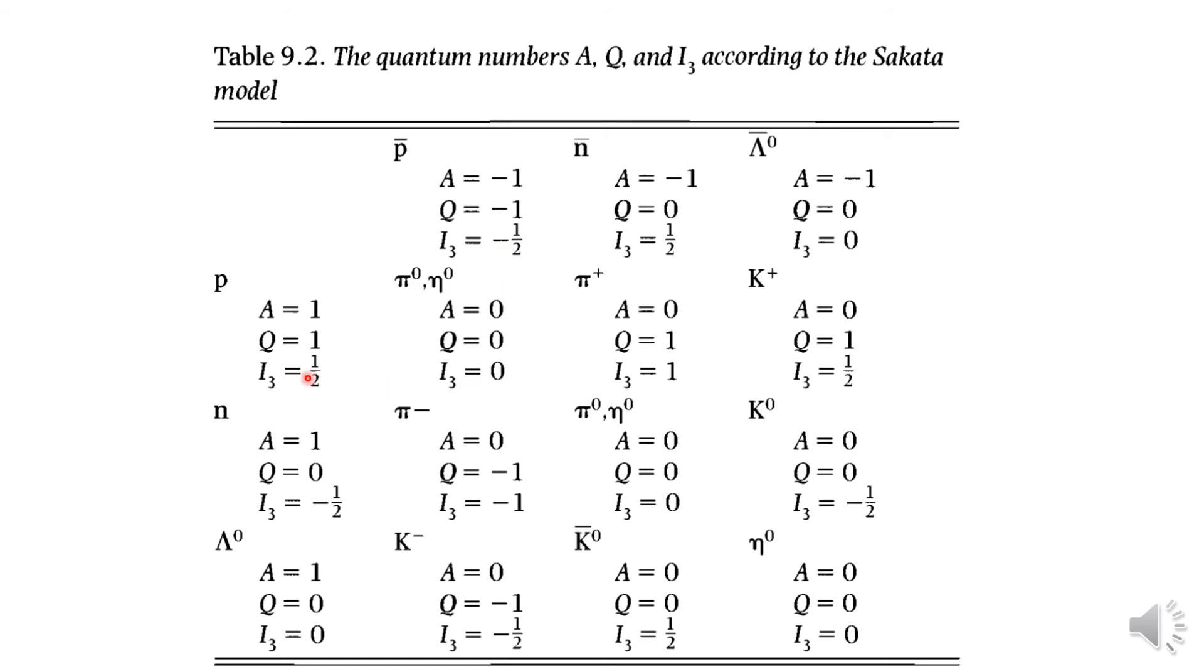So the quantum numbers are just the combination of the composition particles. Similarly for this also, you can see this A is 1 plus minus 1 and this Q is 1 plus 0 here and this I3 is 1 by 2 plus 1 by 2, that is I3 is equal to 1.